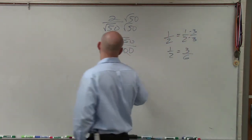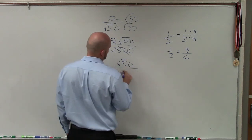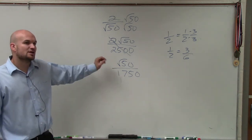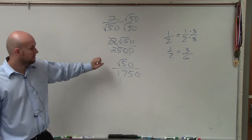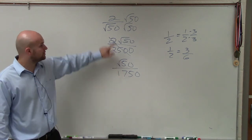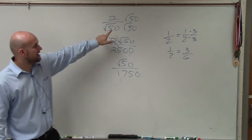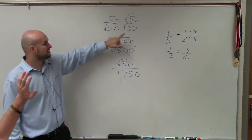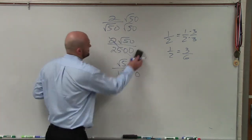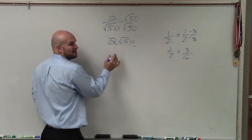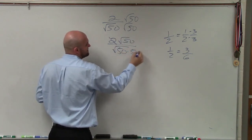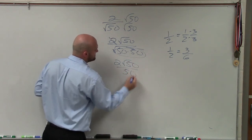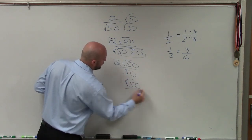Student question: are you multiplying this, or is it a whole different equation? What I'm trying to do is rewrite the expression as divided by a rational number, not divided by an irrational number. To do that, I multiply by my irrational number on the top and the bottom. Square root of 50 times square root of 50 equals the square root of 2,500, which is a perfect square — that gives us 50. So we get 2 times square root of 50 over 50, which simplifies to square root of 50 over 25.